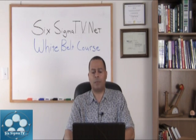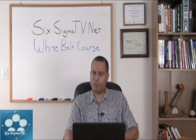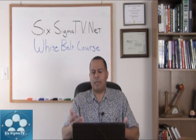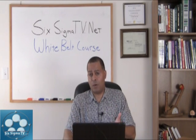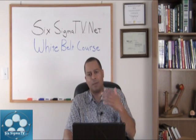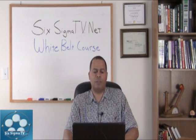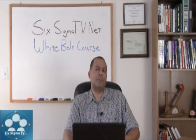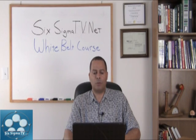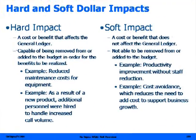Some projects we don't generate hard savings — we want to do other things, just improve customer satisfaction, which we really can't put a dollar value on. So we will put that as a soft savings. We know we've done something to improve, but it might just be a soft save. You'll identify those with your master black belt and with your division financial officer. You want to validate those and make sure it's validated by your division officer. The next slide talks about hard savings — hard dollars and soft savings — soft dollars.